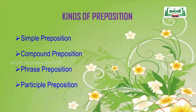There are four kinds of prepositions. The first one is simple preposition. The second one is compound preposition. The third one is phrase preposition. And the fourth one is participle preposition.